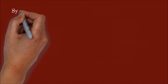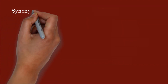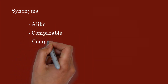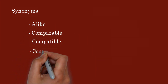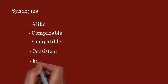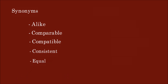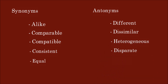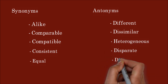Now we will look at synonyms and antonyms of homogeneous. Synonyms: alike, comparable, compatible, consistent, equal. Antonyms: different, dissimilar, heterogeneous, disparate, distant.